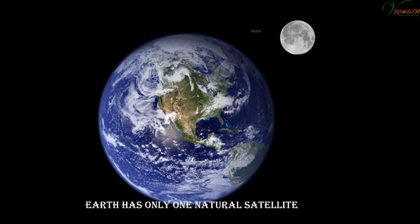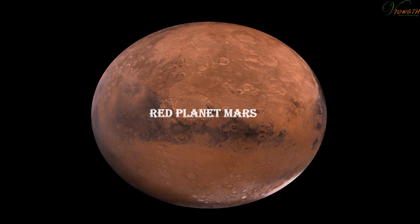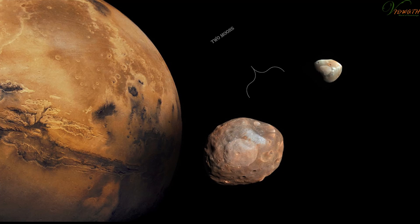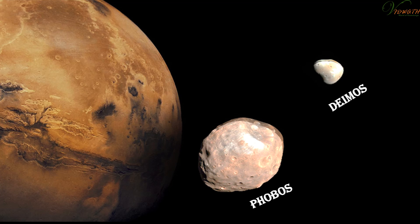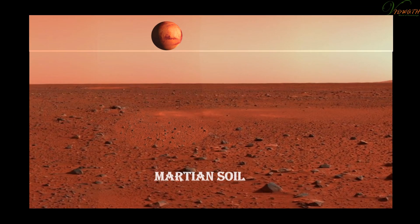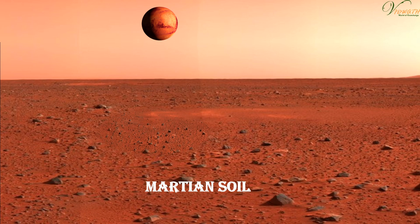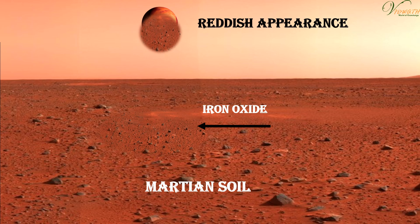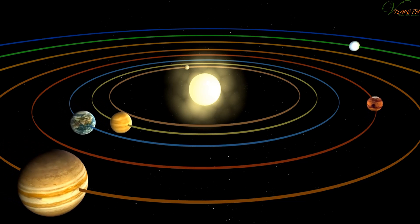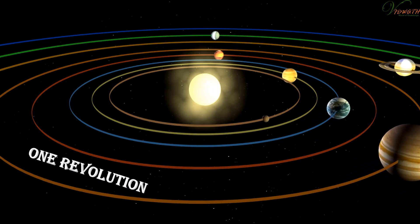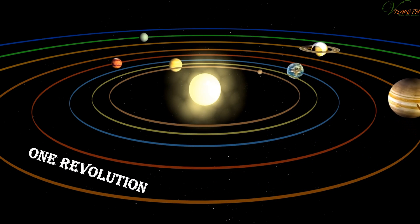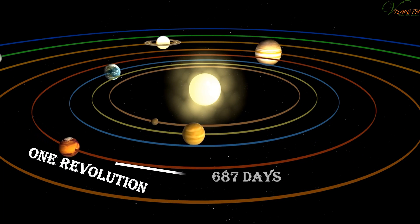The red planet Mars has two moons, Phobos and Deimos. The Martian soil contains a large amount of iron oxide, which gives the planet its reddish appearance. Mars completes one revolution around the Sun in about 687 days.